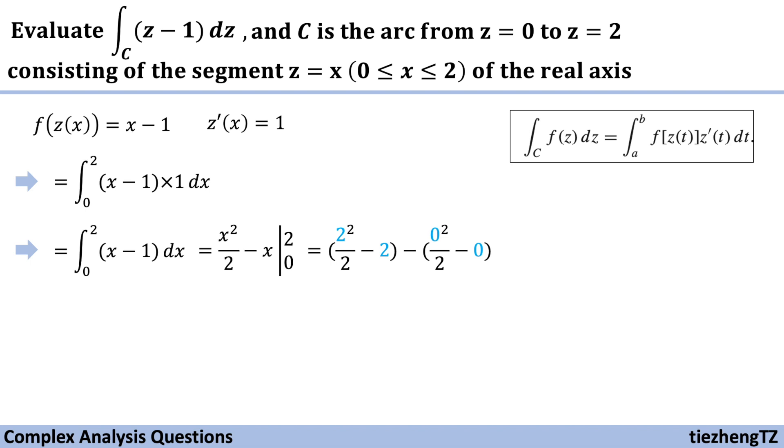Substitute, it becomes 2 square over 2 minus 2 minus 0, which becomes 0 minus 0. So the final result is 0.